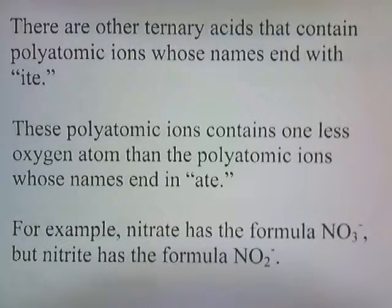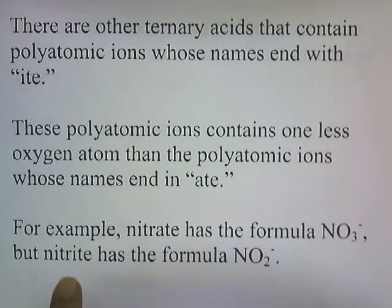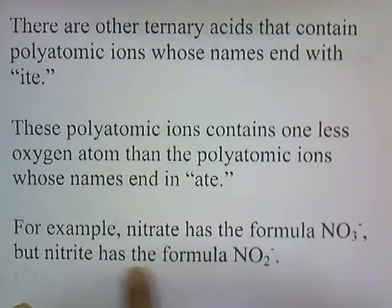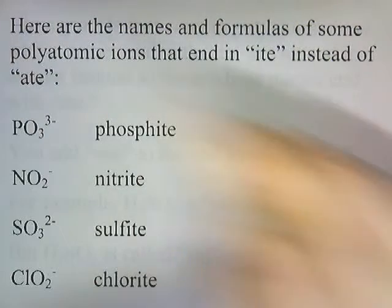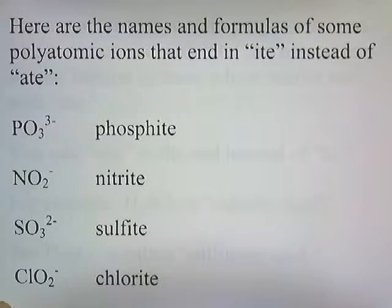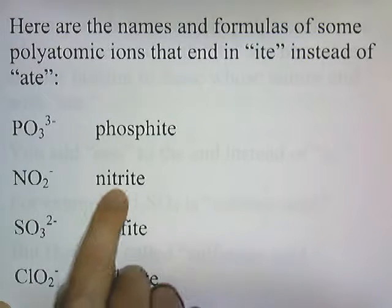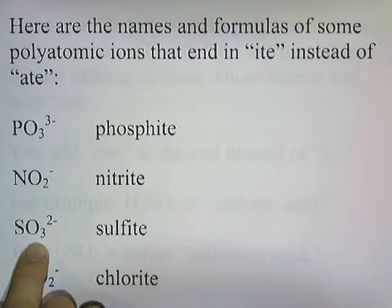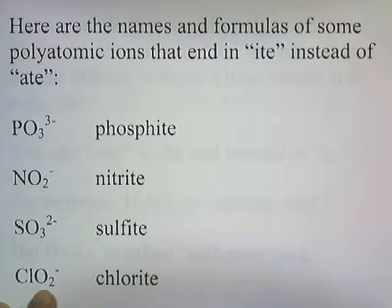There are other ternary acids that contain polyatomic ions whose names end with '-ite'. These polyatomic ions contain one less oxygen atom than those whose names end in '-ate'. For example, nitrate is NO3⁻ but nitrite is NO2⁻. Phosphate is PO4³⁻ but phosphite is PO3³⁻. Sulfate is SO4 but sulfite is SO3 — one less oxygen. Chlorate is ClO3 but chlorite is ClO2, with one less oxygen.